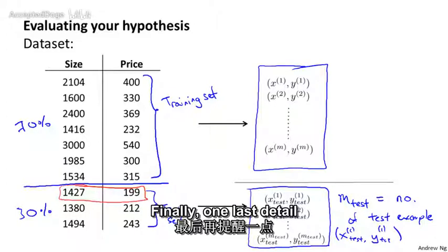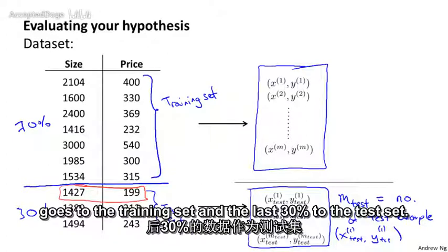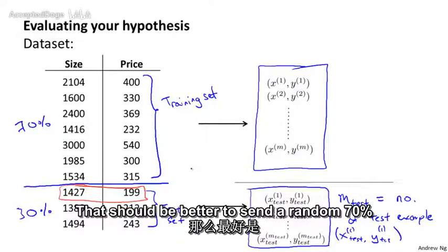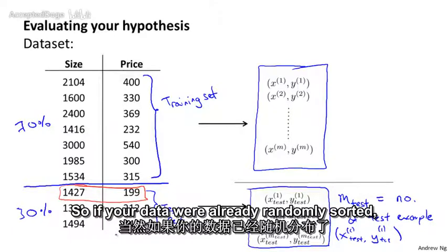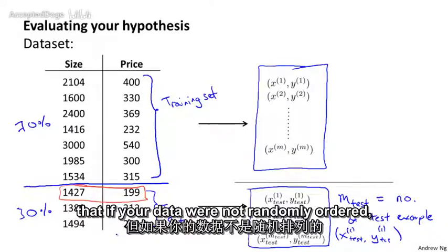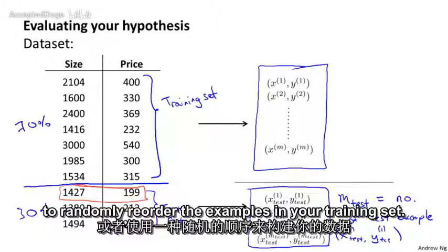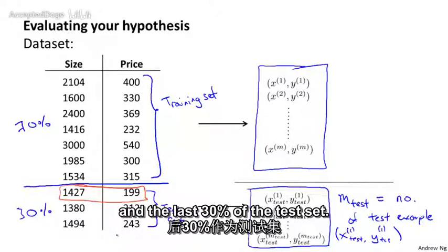One last detail: whereas here I've drawn this as though the first 70% goes to the training set and the last 30% to the test set, if there is any sorted ordering to the data, it's actually better to send a random 70% of your data to the training set and a random 30% to the test set. So if your data were already randomly sorted, you could just take the first 70% and last 30%, but if your data were not randomly ordered, it'd be better to randomly shuffle or randomly reorder the examples before splitting.